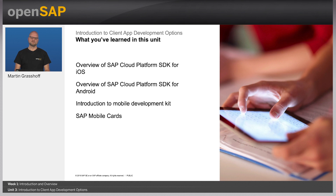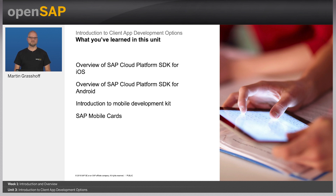In this unit, we have seen the development options of mobile services. We have discussed the iOS SDK, the Android SDK, as well as the Mobile Development Kit for cross-platform native app development. And we have seen what SAP Mobile Cards is all about. This concludes Unit 3: Introduction to Client App Development Options. In the next unit, we will get into the anatomy and architecture of mobile services apps. Thanks for listening, and see you in the next unit.